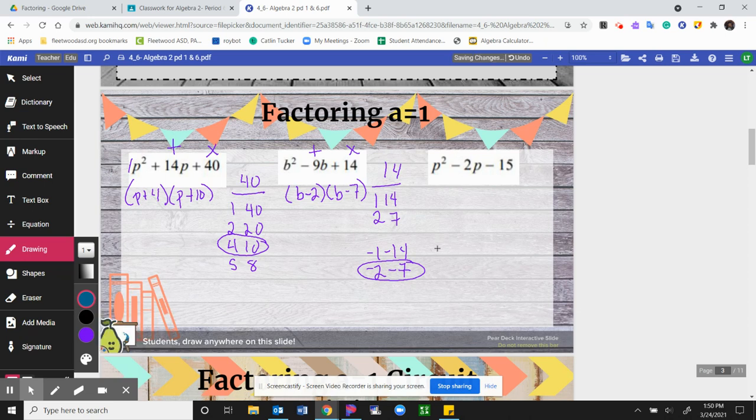And then our last one here, same thing, multiply to get a negative 15 here and adding to get a positive 2. So I do my 15, I have 1 and 15, 2 doesn't go in, 3 and 5, okay, 4 doesn't go in either.